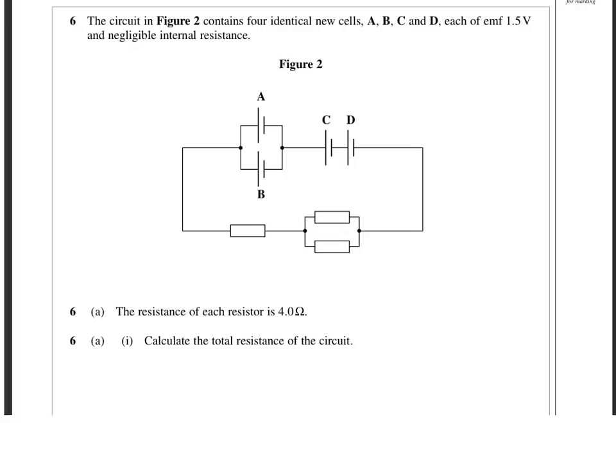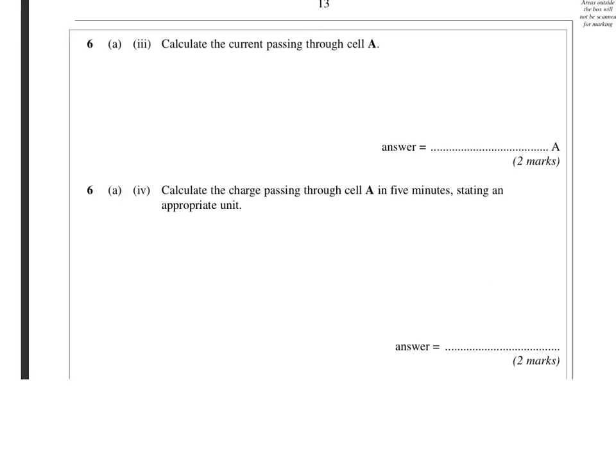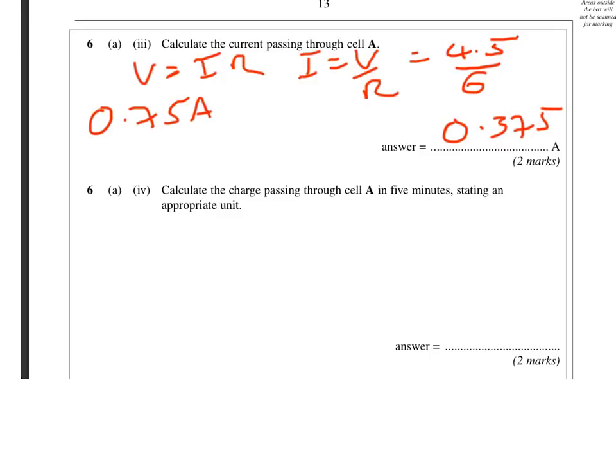We've already worked out the total resistance of the circuit. We did that in this first part of the question. We found out that that was 6 ohms. We've also found out the total EMF of the circuit in the previous part of the question by combining all those cells together. That was 4.5 volts. So if we use V equals IR, or I equals V over R, then 4.5 volts and 6 ohms. That's going to give us a current of 0.75 amps. But remember, that was the total current in the circuit. It splits in that parallel branch. So it's going to be half of that going through each of those cells in the parallel section of the circuit. So the final answer there, 0.375 amps.